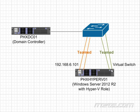The same goes with the physical NICs on the back of the server that we use for our virtual switch. When our virtual machines connect to the virtual switch with their virtual NICs and talk out on the network to external clients, if we just had one NIC and it went bad or got unplugged, all those virtual machines would not be able to communicate. But with teaming, we use two NICs for our virtual switch and they look like one logical NIC that we configure just like a physical NIC.